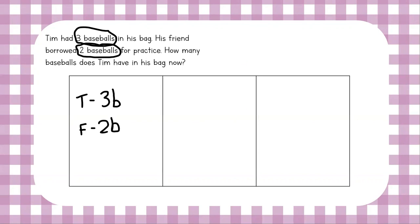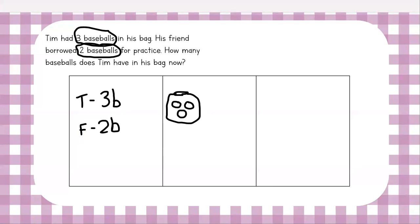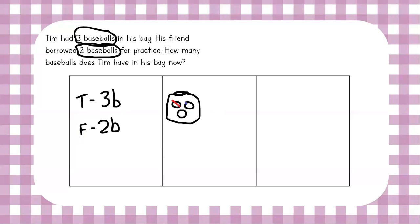Let's draw a picture so we can imagine it. I'm going to draw my little bag here and my little baseballs — so he has three baseballs in his bag. Remember, his friend is going to borrow two. That's like his friend taking two of these baseballs out of the bag, because he's borrowing two. So we're going to go ahead and cross off two — that's like takeaway. We're taking away these two balls out of the bag.